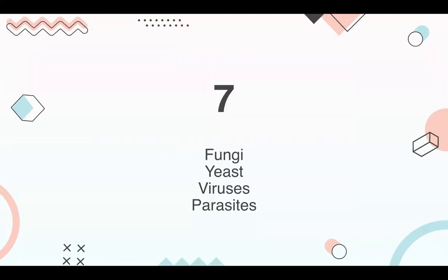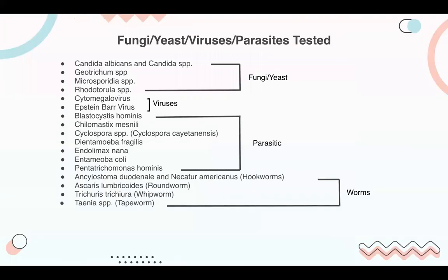Next, let's go over fungi, yeast, viruses, and parasites. There's a list of different fungi, yeast, viruses, parasites, and worms on the GI Map. As an example, Candida is commonly found in patients and is related a lot to dysbiosis. When we look at the overall gut microbiome, we'll often find that Candida can be elevated in contrast with good microbiota — if you have low levels of good bacteria, Candida can rise and vice versa, as they all influence each other.